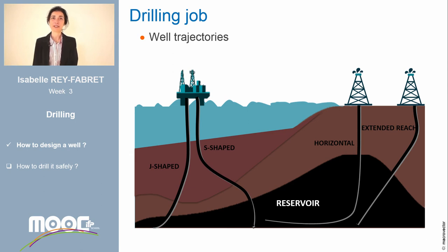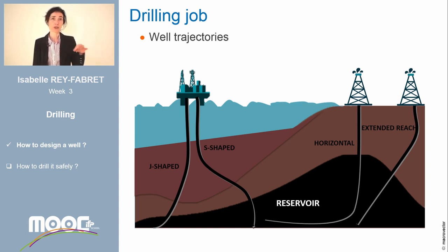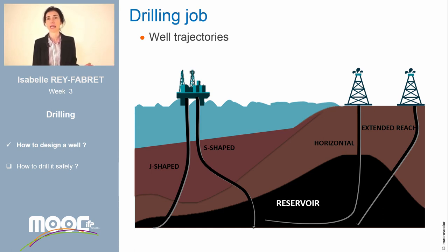The trajectory of a well can be vertical, deviated, or horizontal. The choice of trajectory depends on the location of the rig, the location of the target where the well enters the reservoir, and the trajectory of the drain in the reservoir itself. These last two data points are defined and given by the reservoir engineers to the driller. Now let's go inside to see how the well is drilled in practice.